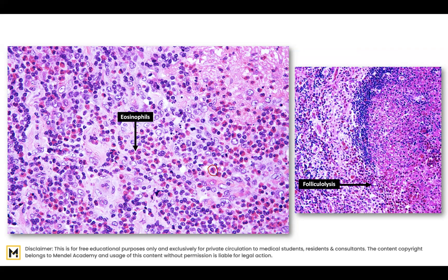The second feature is the presence of follicular lysis. What you can appreciate here is an entire follicle, or part of a follicle, where the dark blue area of the mantle zone seems to have been cut off. The follicle has been lysed and is being penetrated by eosinophils from the paracortex. Follicular lysis — breaching of the follicle and invasion by eosinophils — is another important finding.